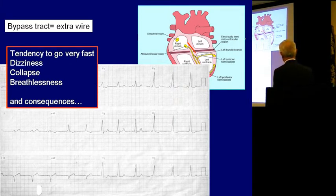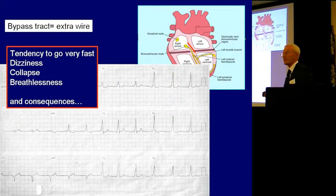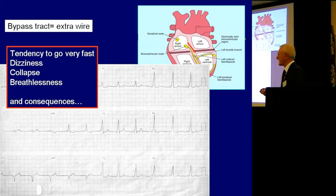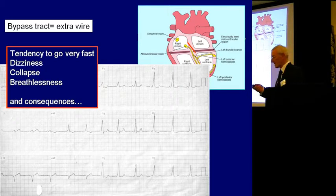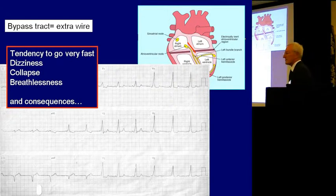The signal can go from the top of the heart down the bypass tract to the bottom, back up to the top, back down to the bottom, and so on. So you can go to 200, 300 beats a minute very quickly, which will make you dizzy, collapse, and breathless. This is easy to treat — we can stick wires in the heart and burn away that bypass tract, and it's gone forever.